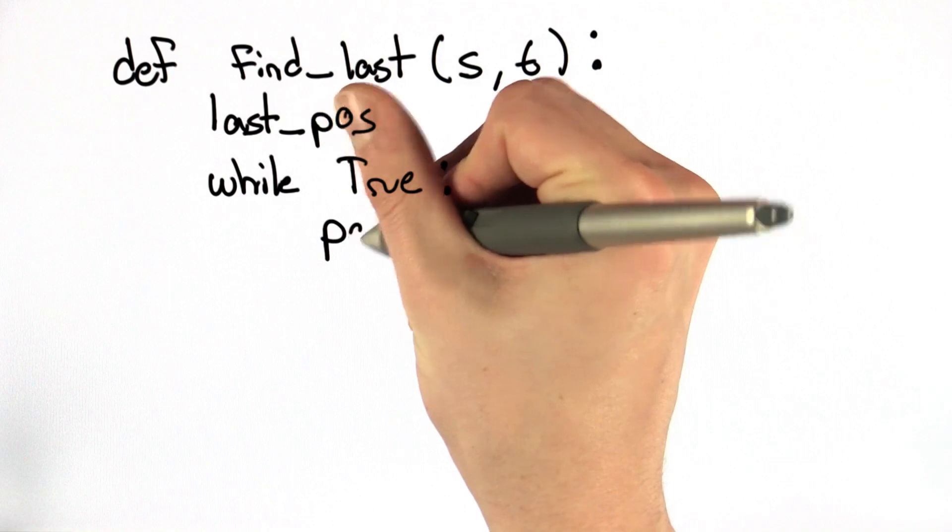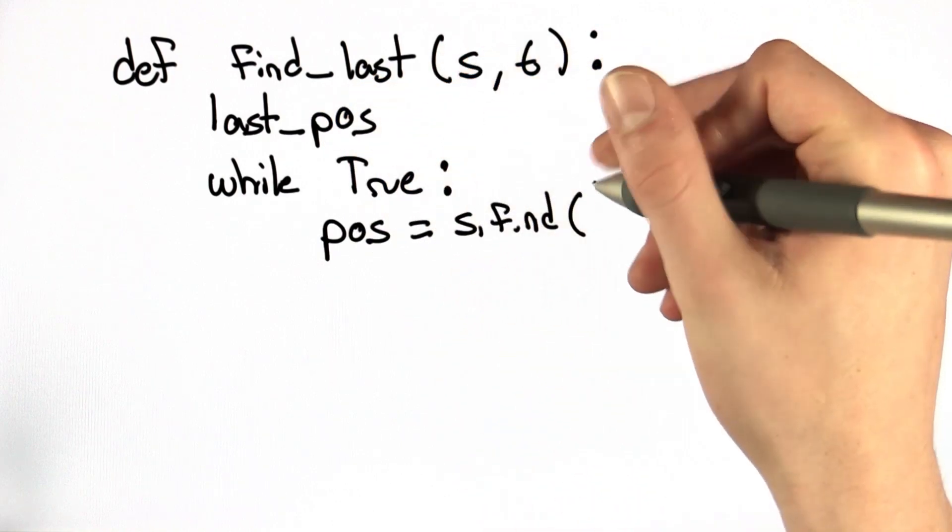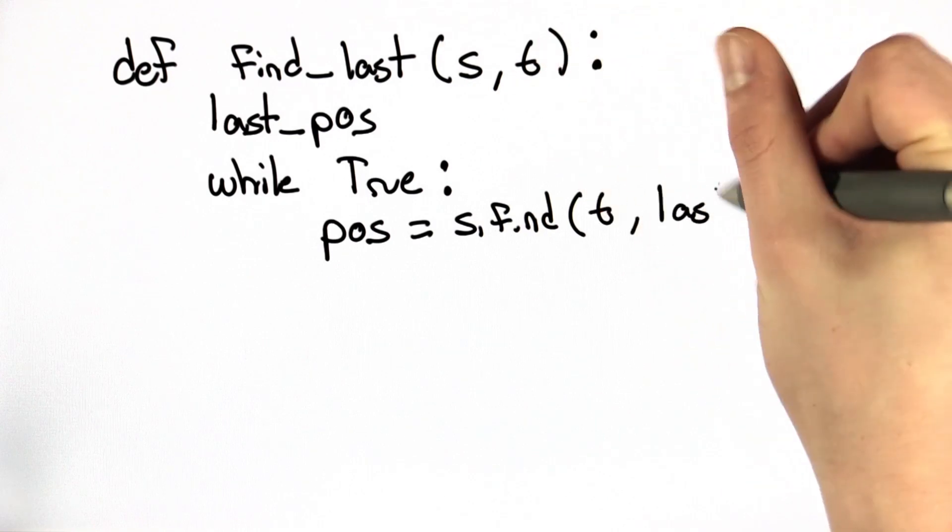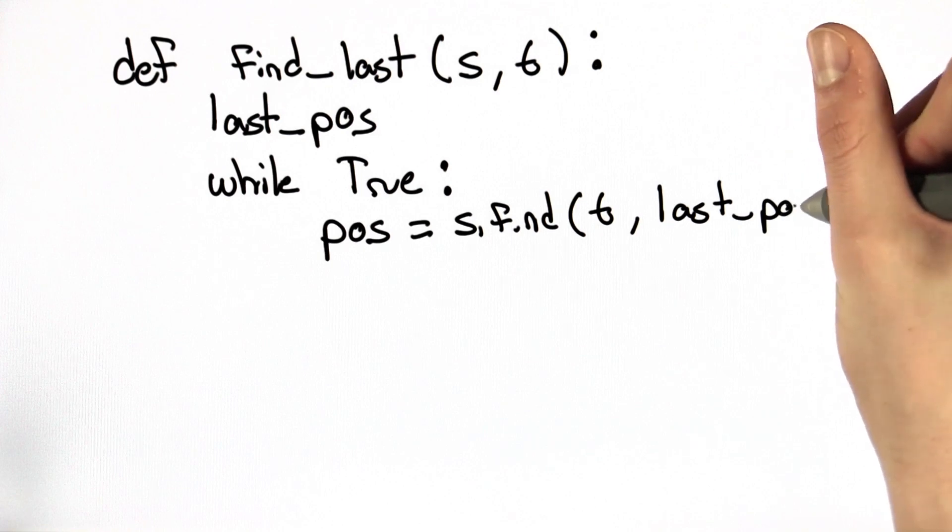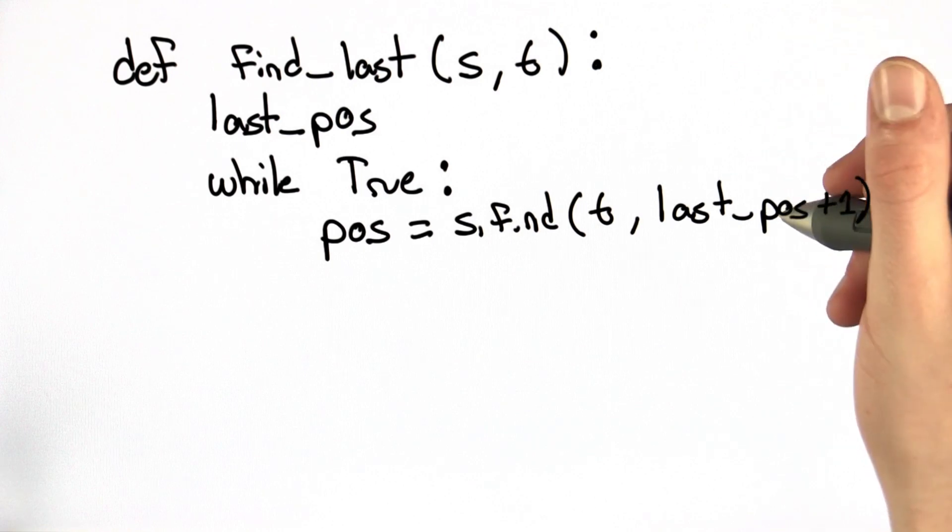we're going to update a position using the find function, where we're searching for t, but we're starting at the last position plus 1. The plus 1 is important so that we don't keep finding the same string over and over again.